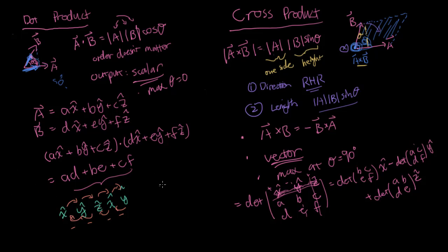This same trick works for the other coordinate systems used in this class. For cylindrical coordinates, remember the order rho, phi, Z, and wrap around. Going forward: rho cross phi equals Z, phi cross Z equals rho, Z cross rho equals phi. Going backward adds a negative sign: phi cross rho equals minus Z, rho cross Z equals minus phi, and Z cross phi equals minus rho.